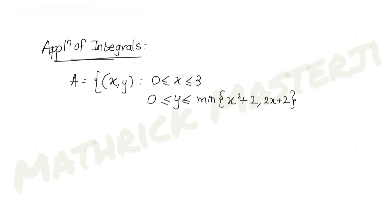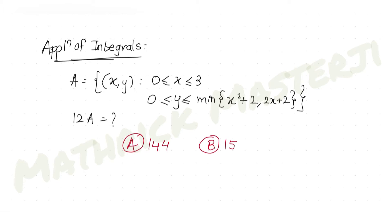The question asks us to find the value of 12 times A. The answer choices given are 144, 154, 164, and 184. We need to figure out which one is correct and solve the question.